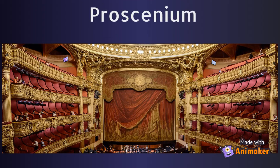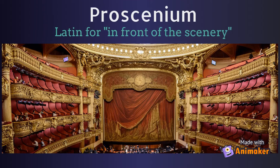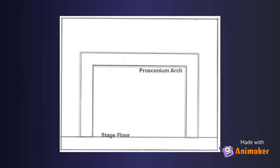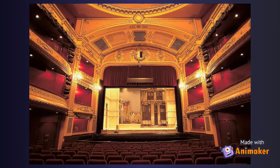The most well-known type of stage is called a proscenium. This is a Latin word meaning "in front of the scenery." Most school auditoriums are proscenium theaters. A proscenium always has a proscenium arch forming a frame through which the audience views the show. Let's take a look at this example.